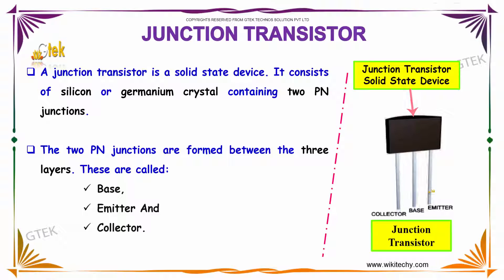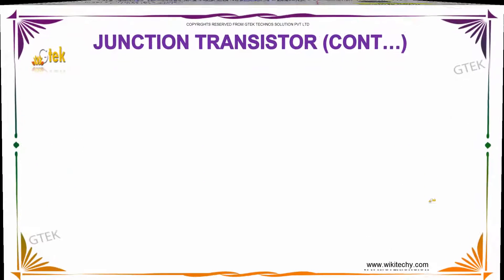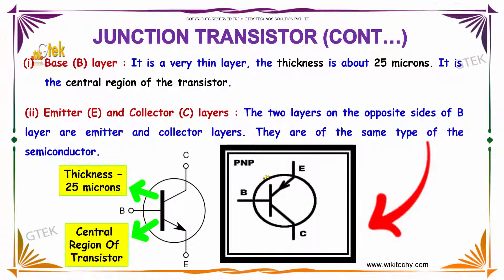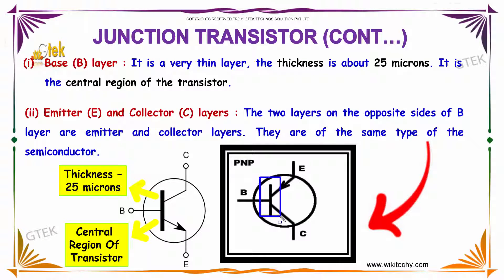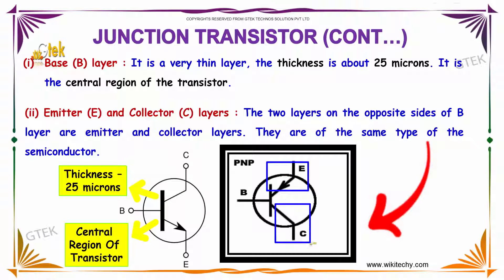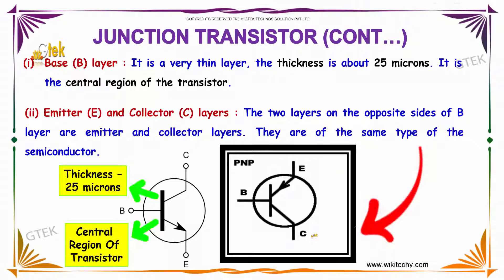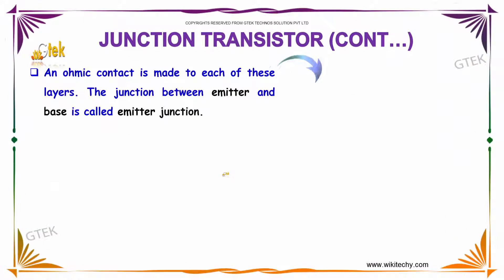The junction transistor has three regions: the collector, base, and emitter. The base layer is a very thin central region, with a thickness of about 25 microns. The emitter and collector layers are on opposite sides of the base layer and are of the same type of semiconductor.